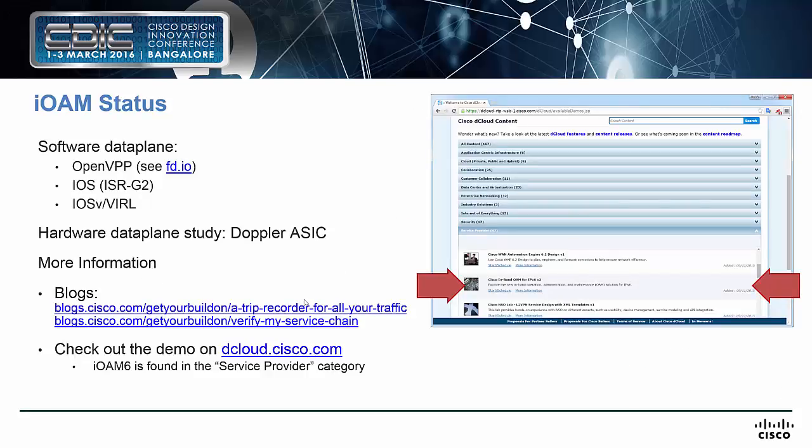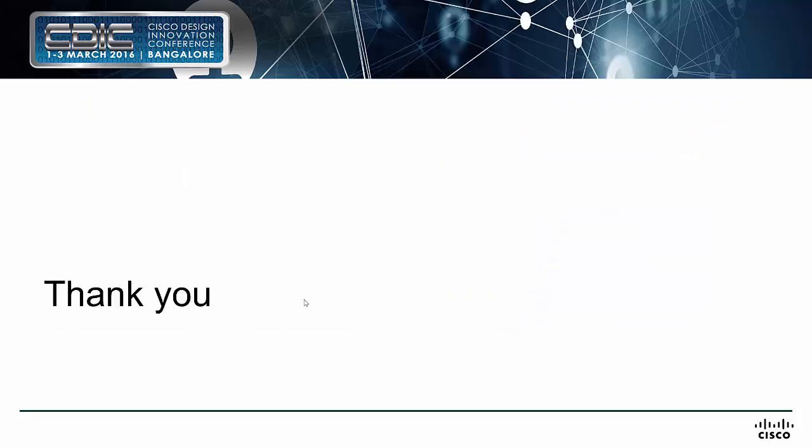In a nutshell, we have running code in a variety of platforms today: running code in OpenVPP (in the process of being fully open-sourced, with traces in FD.io), running code in IOS T-train, and running code in IOS-XE virtual environment — the last of which you can view live at dcloud.cisco.com to try it yourself. We've also done data plane studies on hardware like Doppler A6, proving we can do the entire thing in a single cycle. In-band OAM can be done with full performance — we are not hampering the network environment just by adding additional metadata to packets. Thank you.